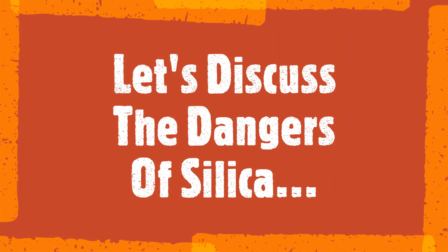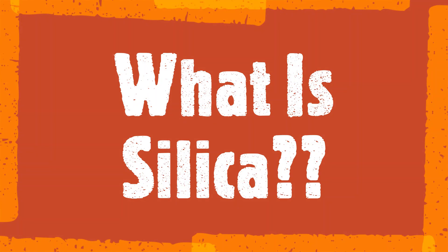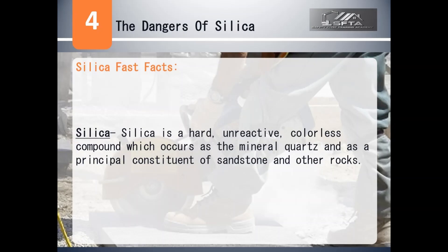I'm going to discuss the dangers of silica. You may ask, what is silica? Why do I even have to be concerned about it? Silica is a hard, unreactive, colorless compound which occurs as the mineral quartz and as a principal constituent of sandstone and other rocks.